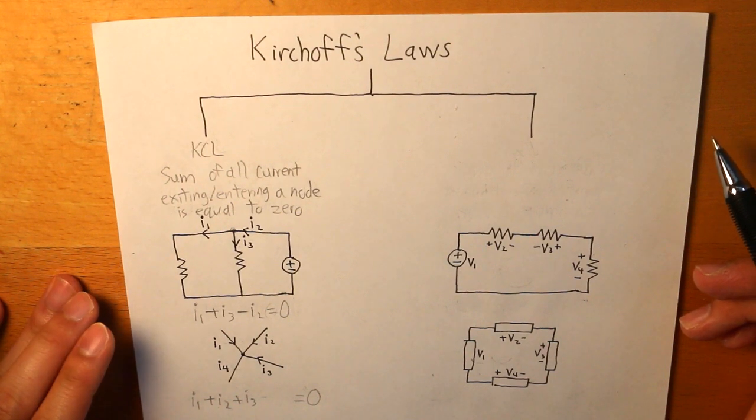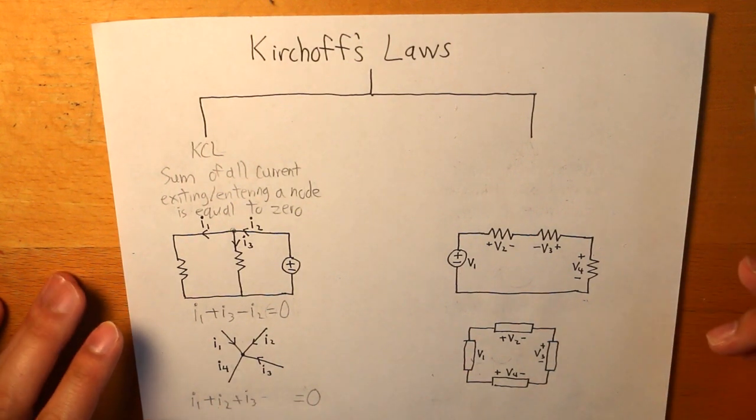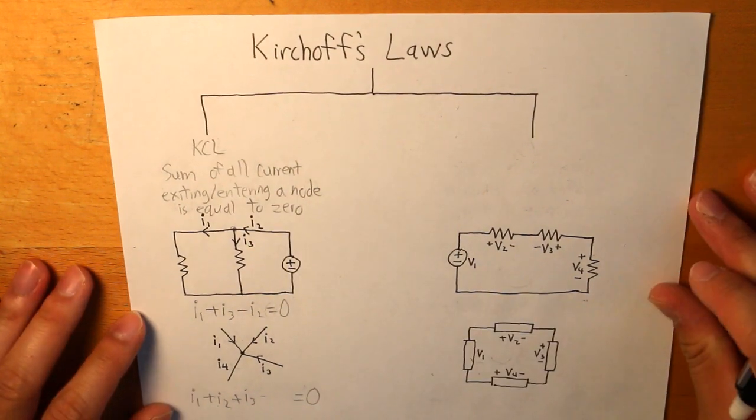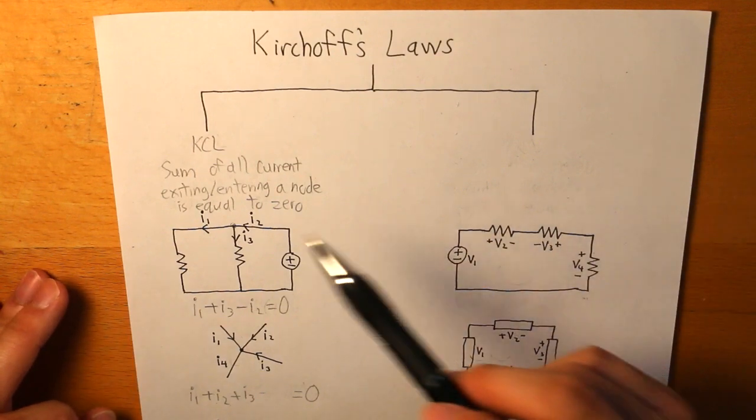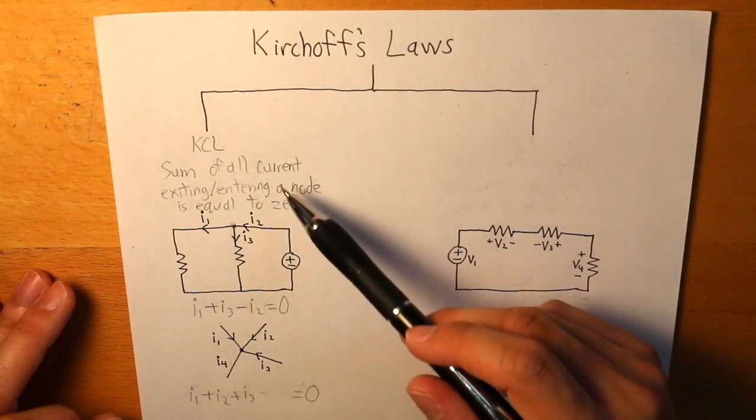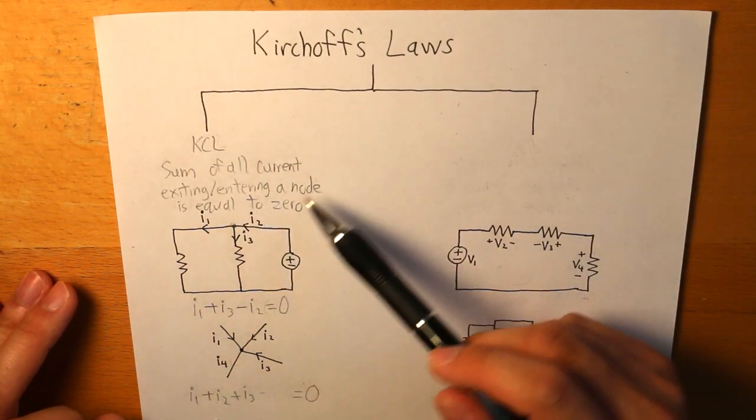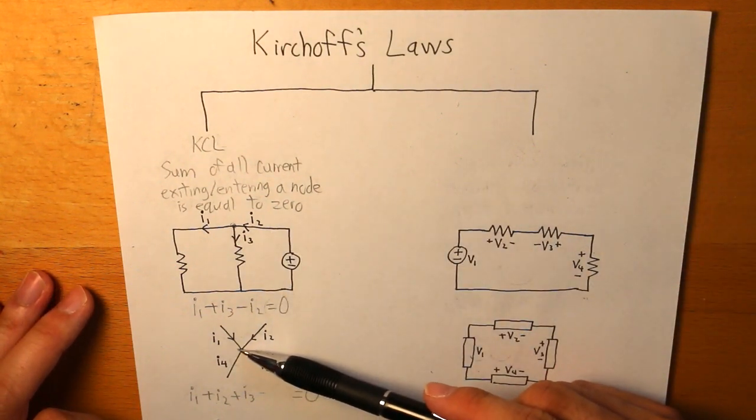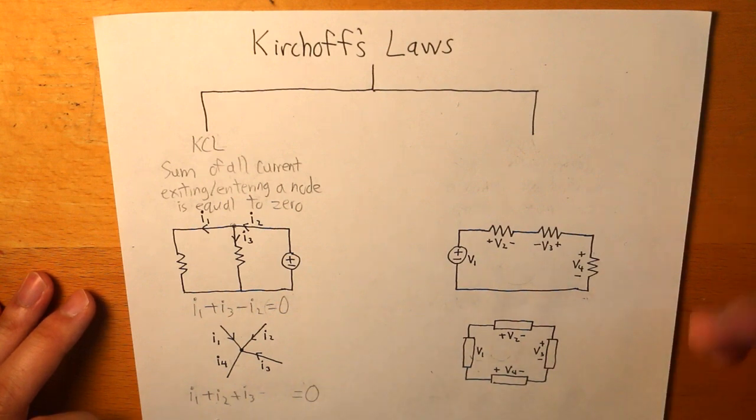Now the only clue that we can determine whether I4 is exiting or entering that node is to understand what KCL is. And we do know for in fact that KCL states that the sum of all currents exiting or entering that node is equal to zero. That basically means is that I4 has to exit.